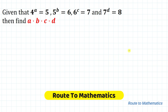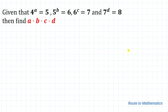Hello everyone, welcome to Root 2 Mathematics. In this video we are going to solve an exponential problem in two ways. In the first way I am going to solve this problem using exponential rules, and in the second way I am going to use logarithm rules. The given question is: 4 to the power a equals 5, 5 to the power b equals 6, 6 to the power c equals 7, and 7 to the power d equals 8. Find a multiplied by b multiplied by c multiplied by d.